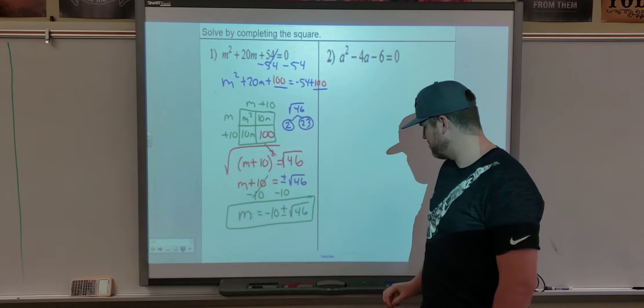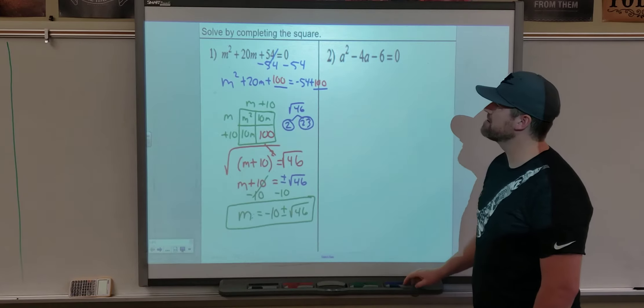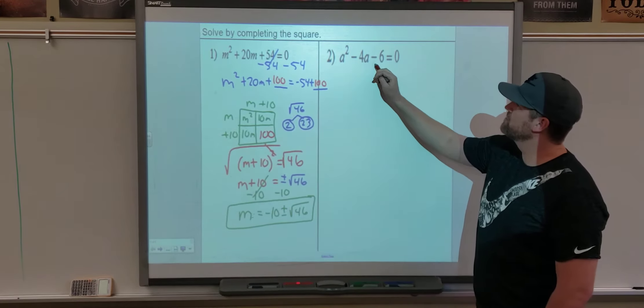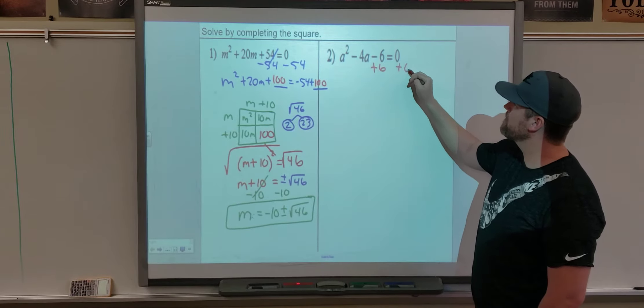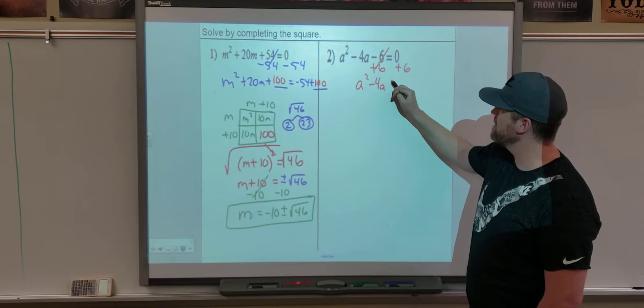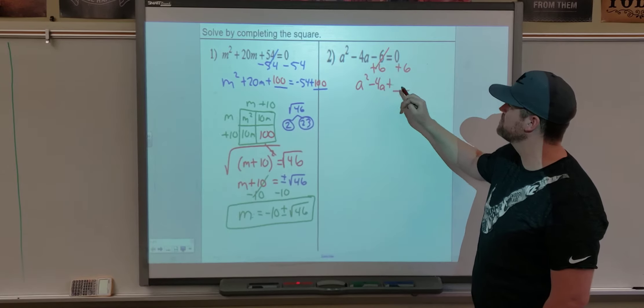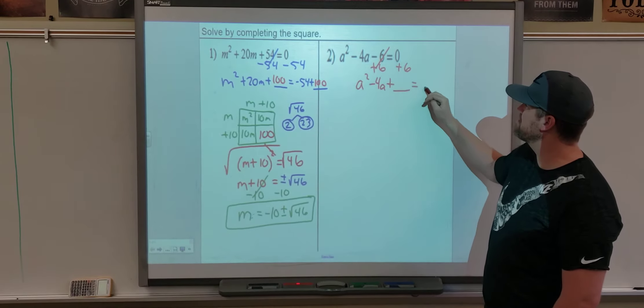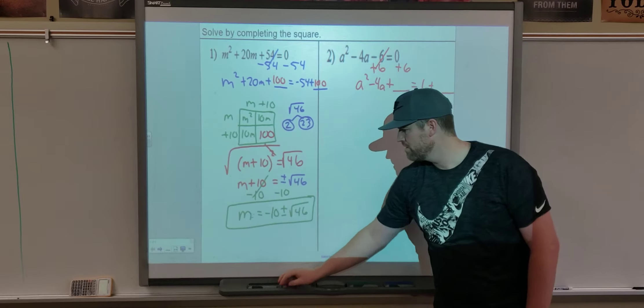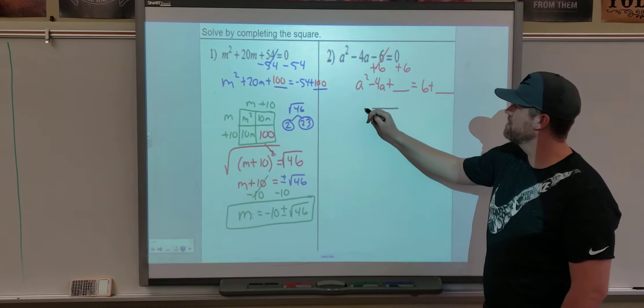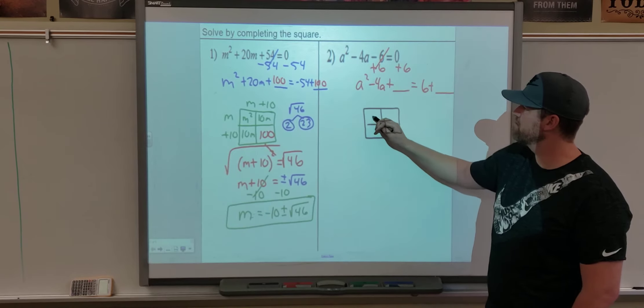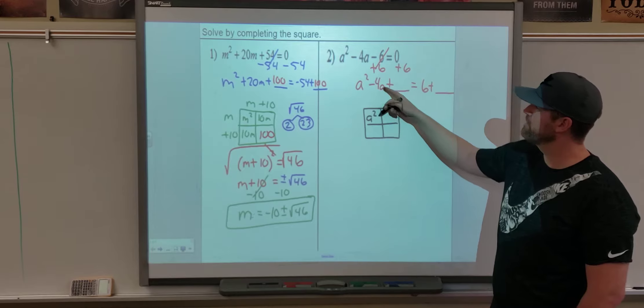Completing the square. All right, example number 2. We want the C to go to the other side. Gives me A squared minus 4A plus our new C value equals 6 plus our new C value. We're going to make our square. First term, first box. Split the middle.